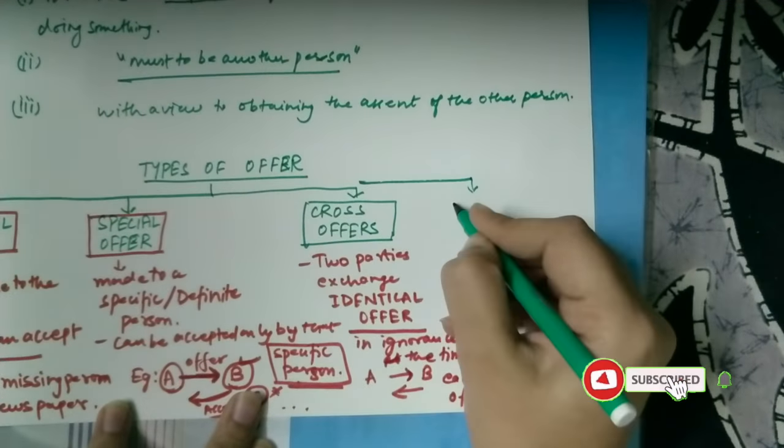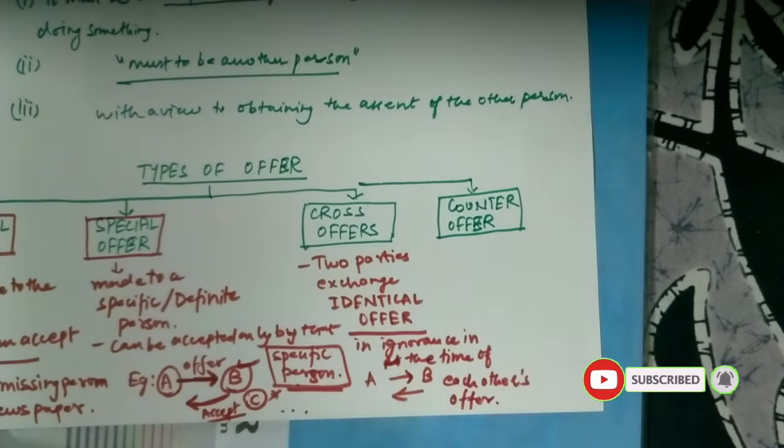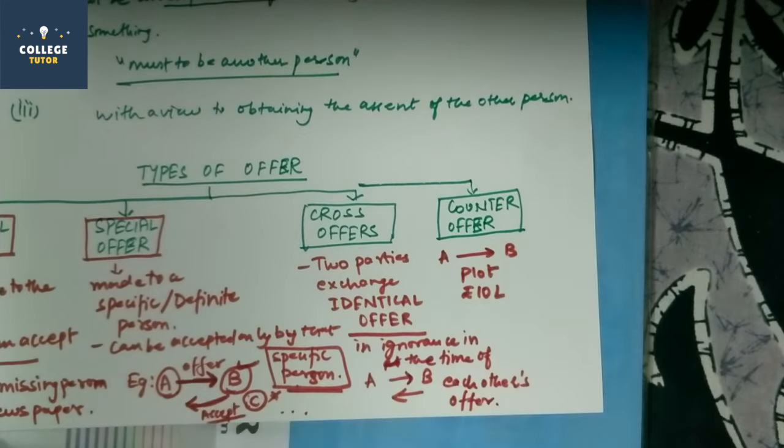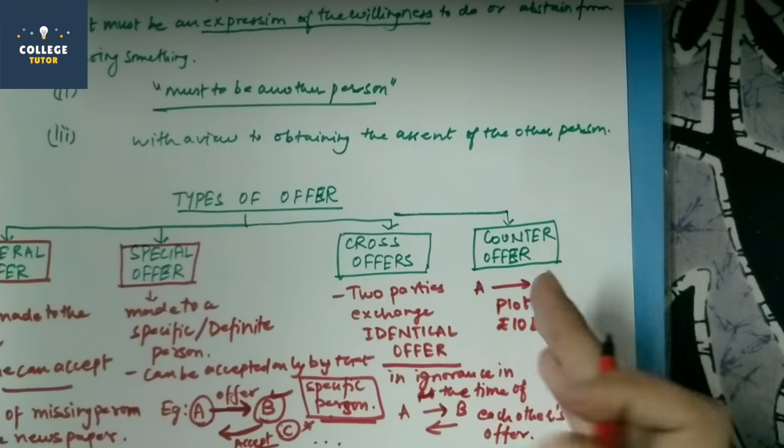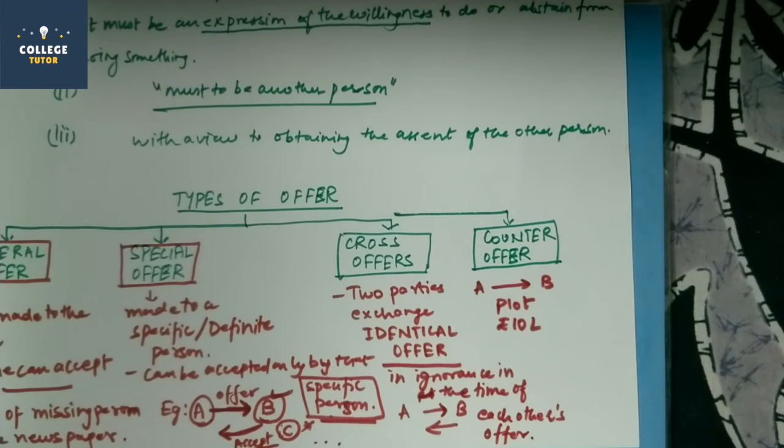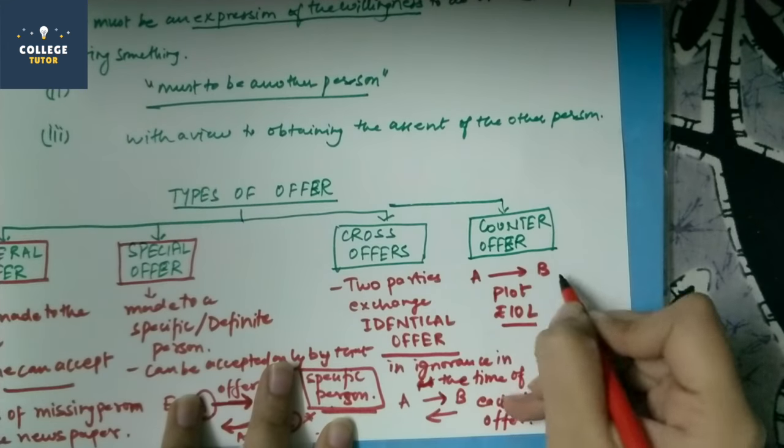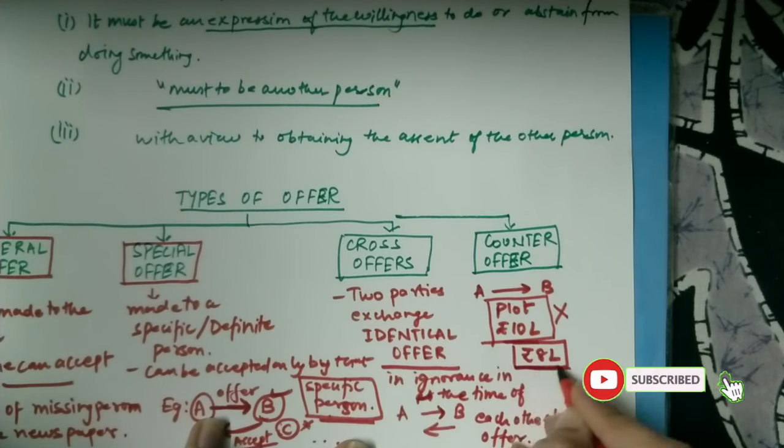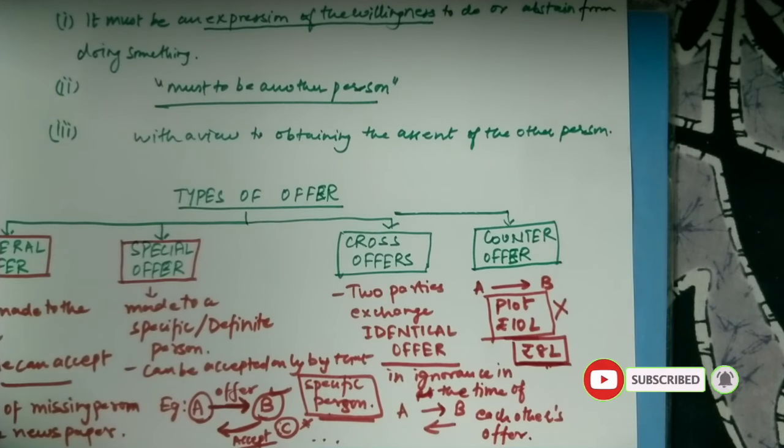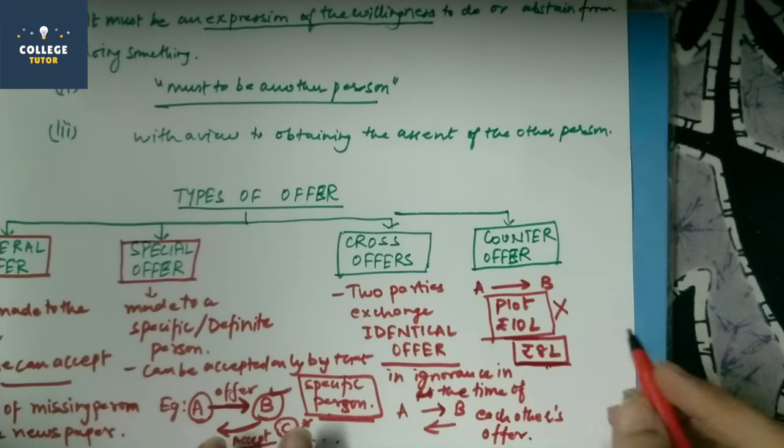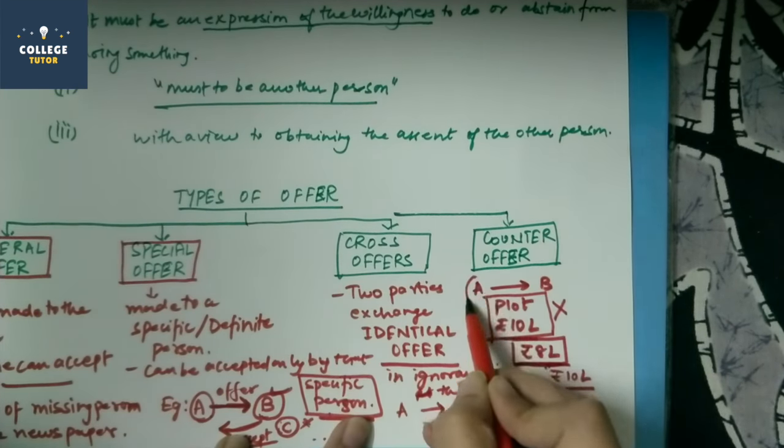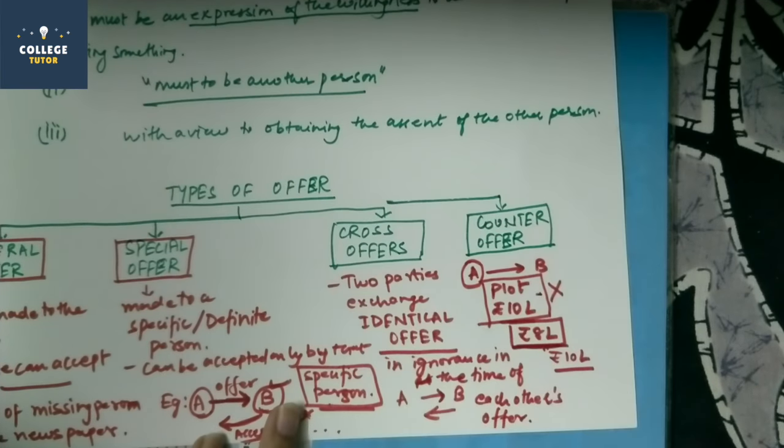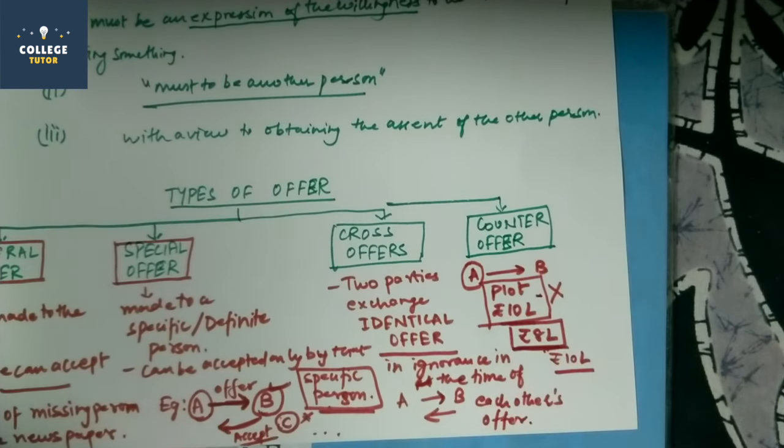Now the fourth type of offer is counter offer. Counter offer can be explained with an example. Let's take an example. A is offering to B his plot for 10 lakh rupees. A says that this is my plot, if you B want to take it, it's 10 lakh rupees. B says okay, I will take the plot but not for 10 lakh, I will take it for 8 lakh. Now this original offer is terminated because the new offer is now 8 lakh rupees. So this is what counter offer means. If in case B says okay, I'll buy it for 10 lakh, then A has the right to refuse because the original contract, sorry, the original offer was terminated. So this is what counter offer means.